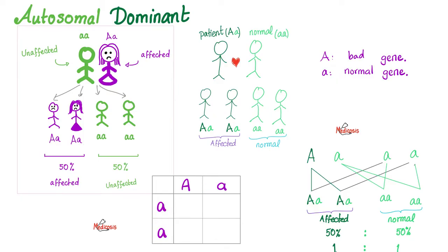Let's do the Punnett square: Big A, small A — sick child. Small A, small A — healthy child. Big A, small A — sick child. Small A, small A — healthy child. Half of the offspring are affected: 50% affected, 50% normal, so the ratio is 1 to 1.